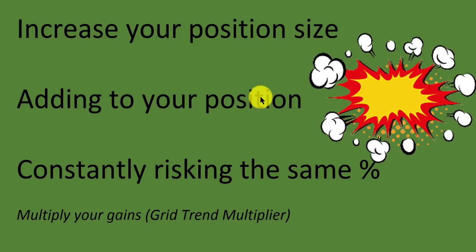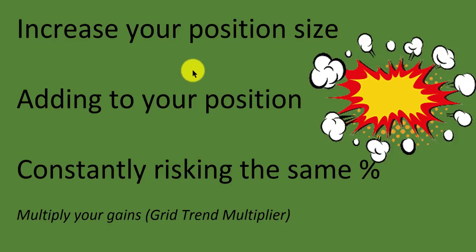The first principle is to increase your position size. If you want to increase your gains, instead of risking one lot, risk two lots — it's very simple. The second is to add to your position: if you have a successful trade, don't just leave it — add another position until you reach your target. The third is to consistently risk the same percentage on every trade. As your account grows, you risk more dollars; if it shrinks, you risk fewer. Simple principles — but if you think you'll get rich risking one mini-lot on every trade, you won't.